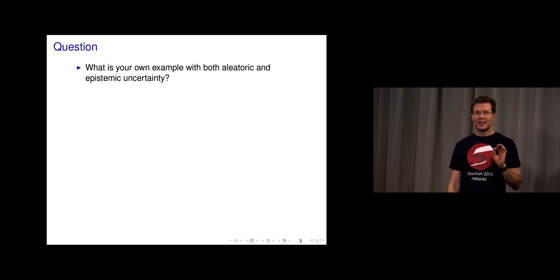In the end, there's a question you can discuss with your friends or answer to me next time we meet: What is your own example with both aleatoric and epistemic uncertainty? I had the example of a pack of chips, and you can now think about your own example. See you.